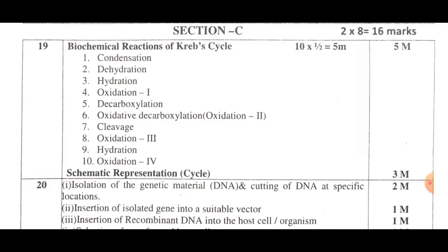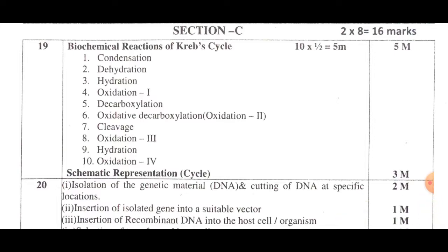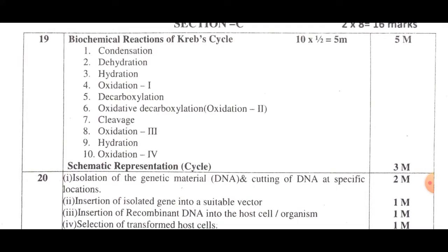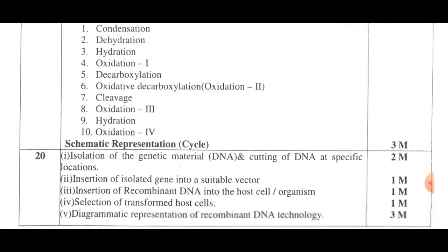For question 19, the schematic representation is 3 marks and the reaction carries half a mark each for a total of 5 marks. The cycle diagram is 3 marks and reactions are 5 marks — 5 plus 3 equals 8 marks total.